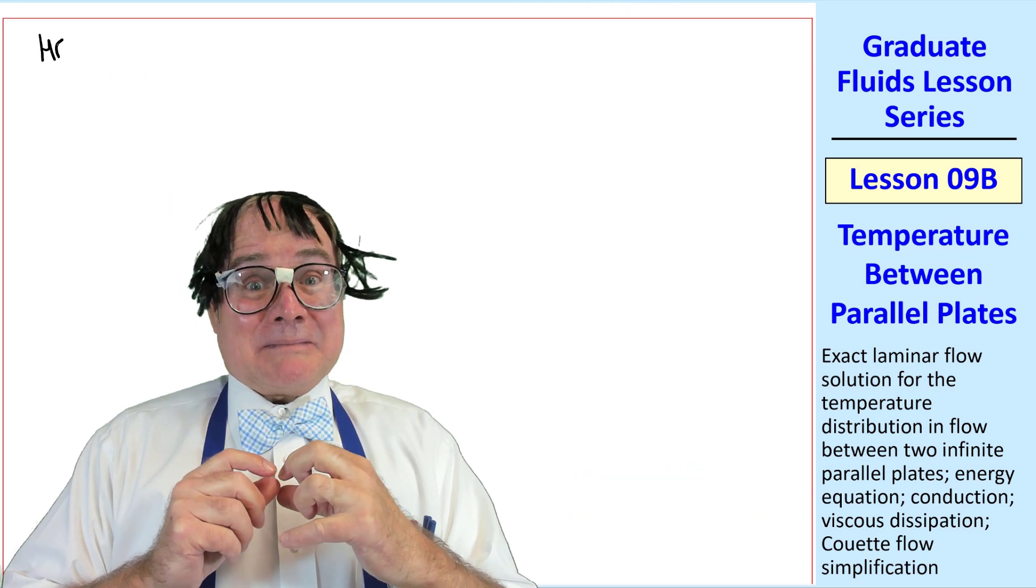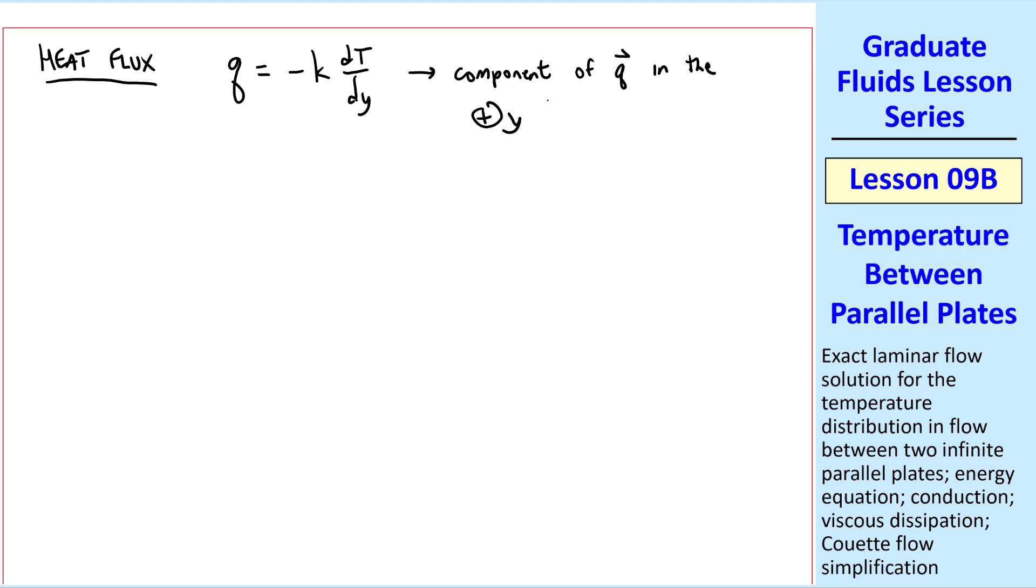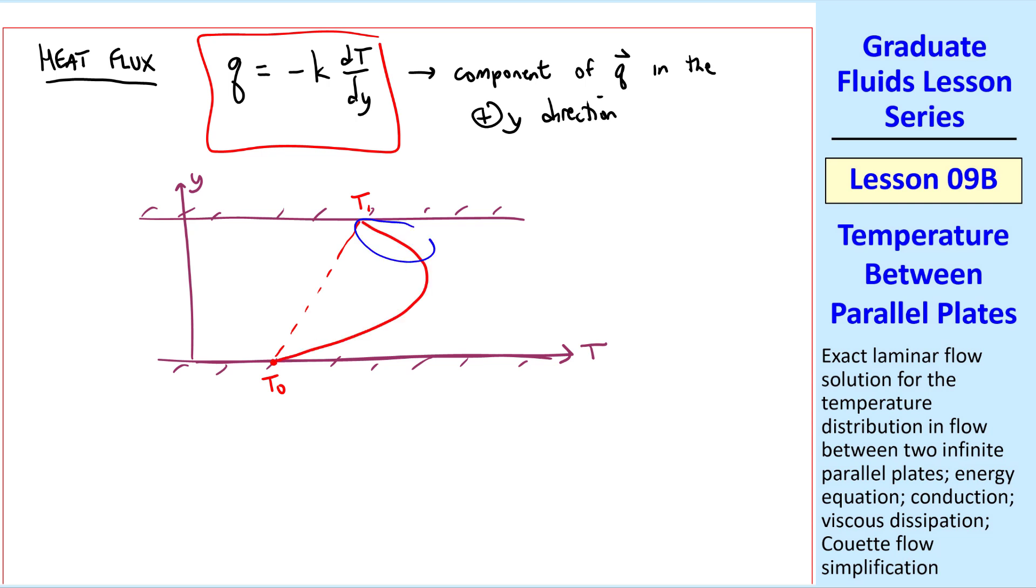Let's examine this more closely in terms of heat flux. Recall that heat flux little q is minus k dt dy, which comes from the one-dimensional diffusion equation, where this q is the component of the heat flux vector in the positive y direction. So let's use this to analyze the heat flux through the walls of our Couette flow. I re-sketch the temperature profile, going from T0 to T1, and notice that here, dt dy is less than 0.